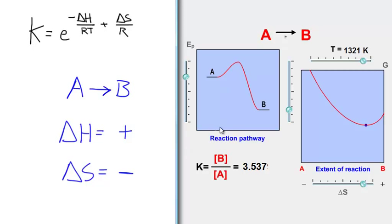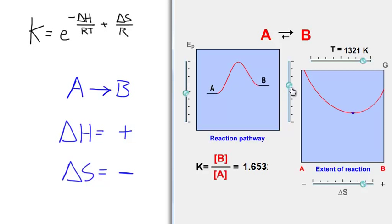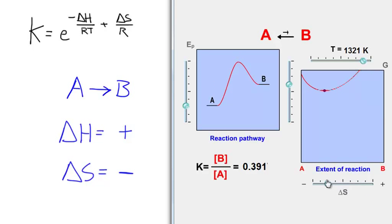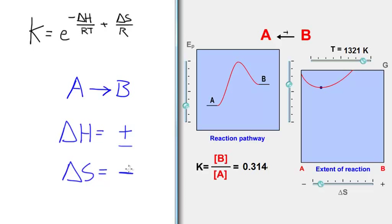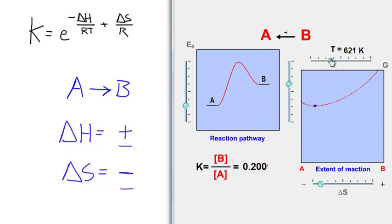Now let's consider a situation where the reaction is endothermic and there's a drop in entropy going from reactants to products. I'm going to make the products of higher potential energy than the reactants and set delta S to be negative. You can see that I have a K value less than 1. Because the process is both energetically and entropically unfavored, no matter what I do with T, the equilibrium constant will not go above 1. This will always remain reactant favored.